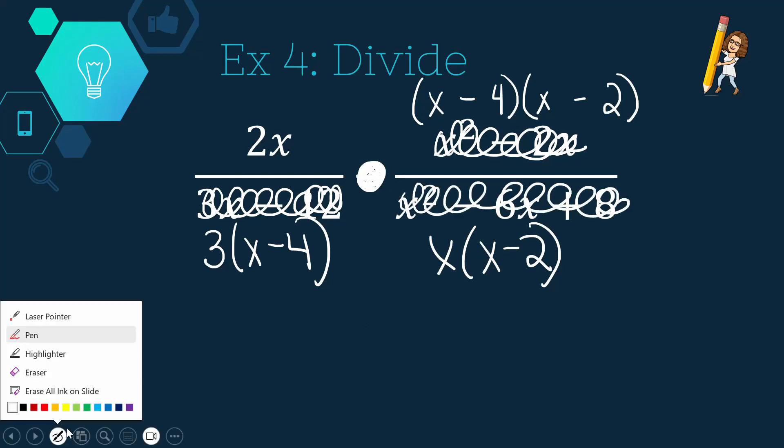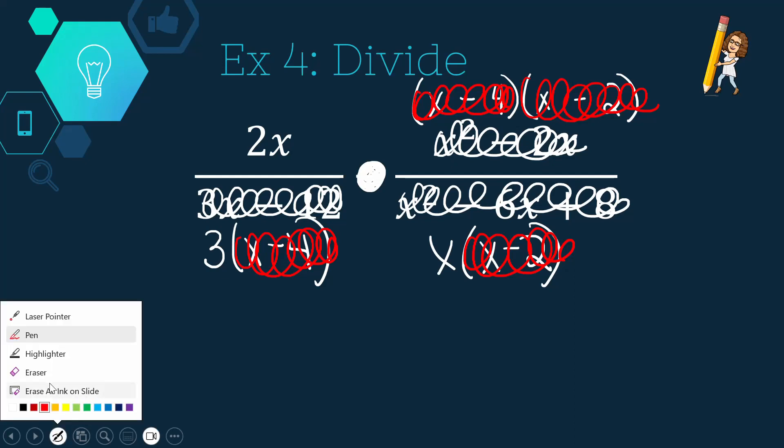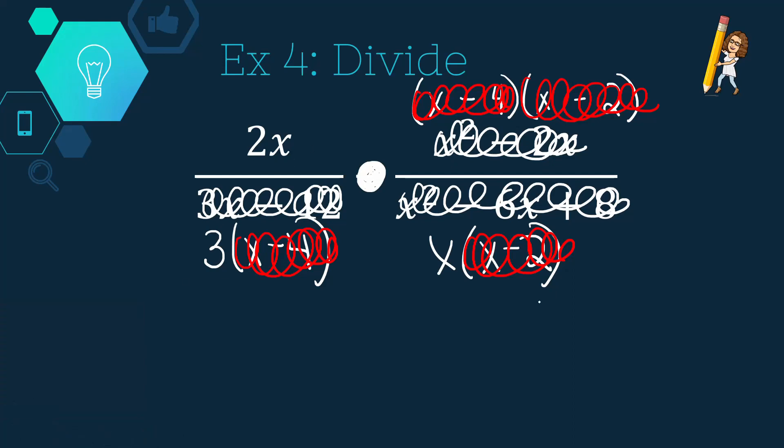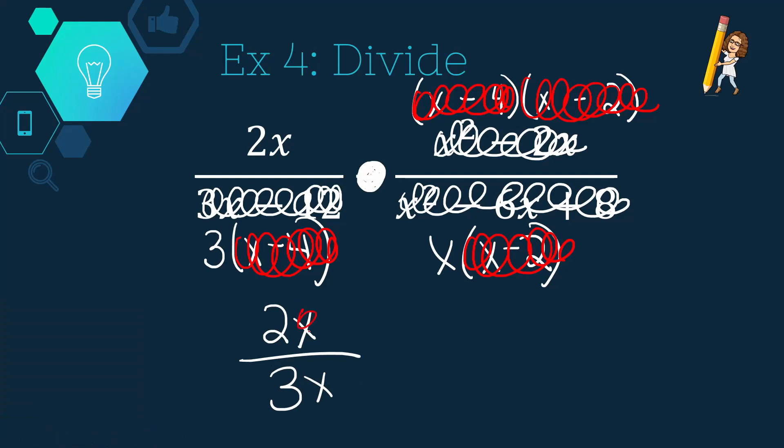And again, we are going to cancel what we can. I have an x minus 4 up here, and an x minus 4 down here. I have an x minus 2 down here, and an x minus 2 up there. You know what? I think I need to rewrite what we have. 2x is still up top. And we have a 3 and an x. Ooh, you know what? I'm not done, because I see these x's canceling, because I have an x on top and an x on bottom, so they can actually simplify further. And I will be left with 2 thirds.